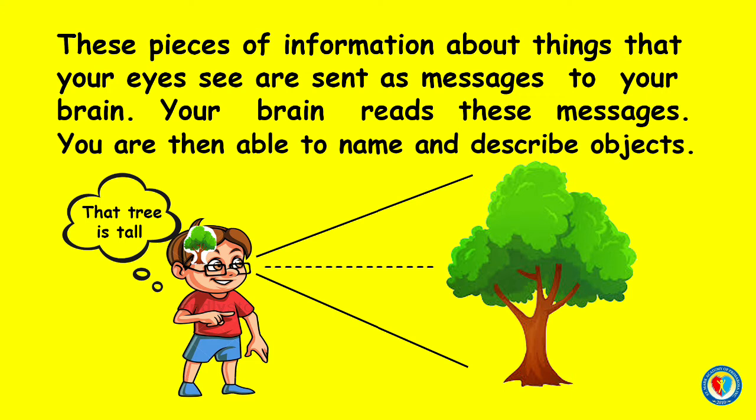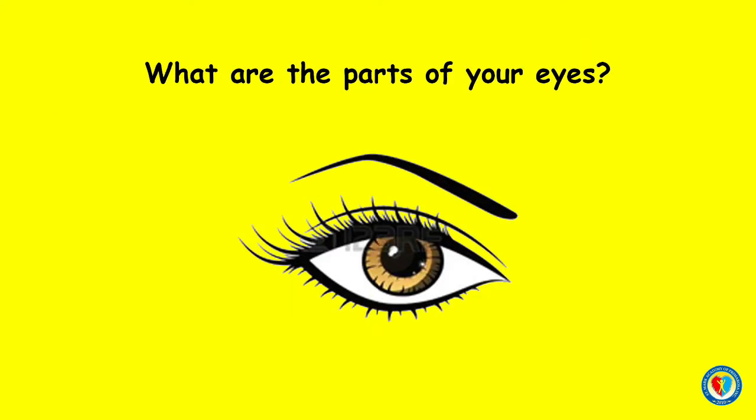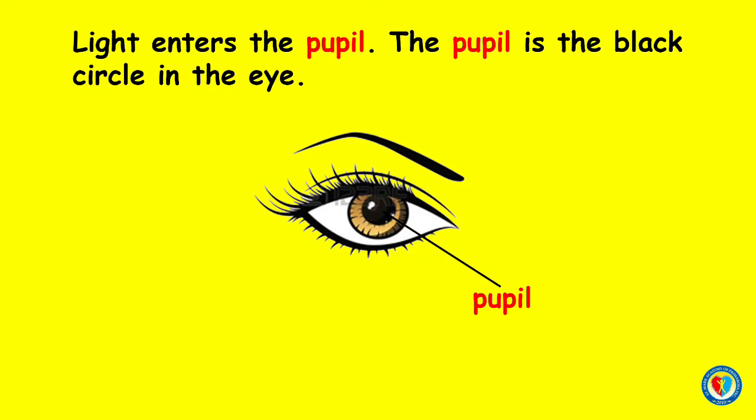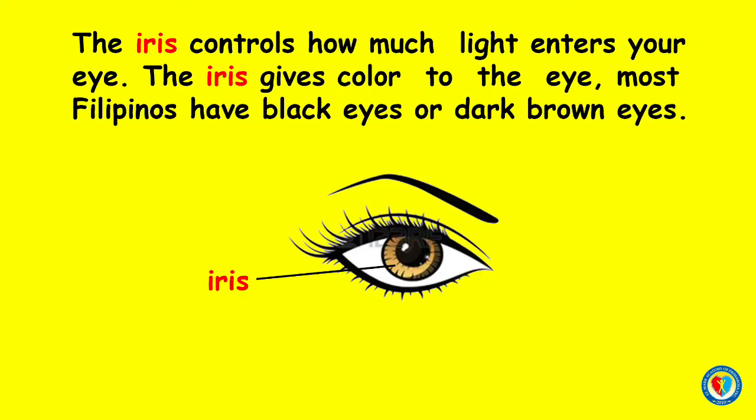Now, let's proceed to what are the parts of your eyes. Light enters the pupil. The pupil is the black circle in the eye. The iris controls how much light enters your eye. The iris gives color to the eye, and most Filipinos have black eyes or dark brown eyes.